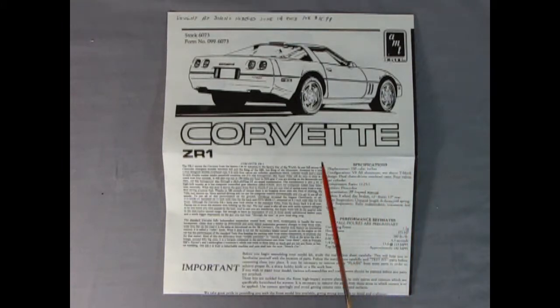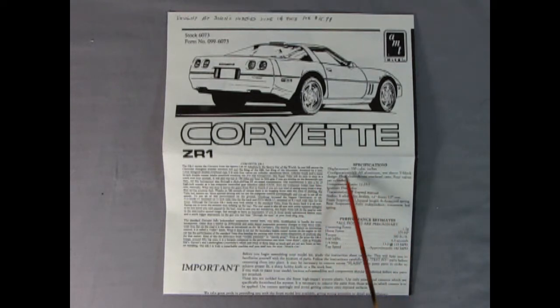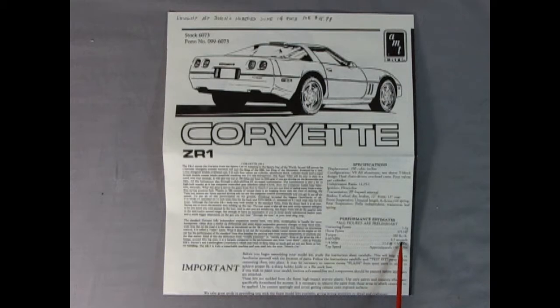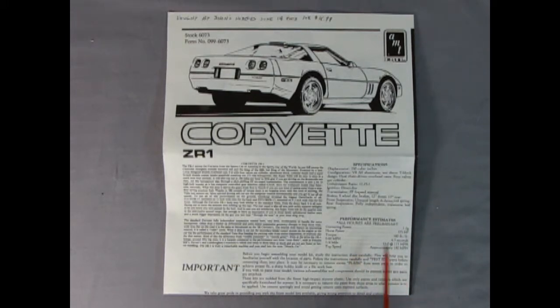Hey everybody it's your old pal Danny the dog again. So here's the instruction sheet and they sure really give you a lot of information here on this Corvette ZR1. This entire box right here is a write-up. And here we've got our specifications like our displacement of 350 cubic inches and all that jazz. It even gives you the performance estimates. All figures are preliminary. I guess they didn't know back when this kit came out for sure. Look at this cornering power 1.2 G's. Horsepower 375. Torque 380 foot-pounds. Zero to 60 in 4.5 seconds. Quarter mile in 13 at 115 miles per hour. Top speed approximately 180 miles an hour. That's crazy.